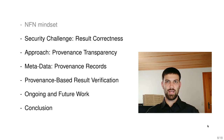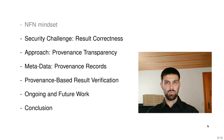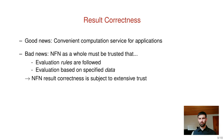Next we introduce a challenge in NFN, namely that of result correctness. We then present a solution approach which is based on provenance records. The whole NFN network needs to be trusted that evaluation rules are followed and that the evaluation is based on the specified data. What I want to say is that result correctness in NFN is subject to extensive trust.